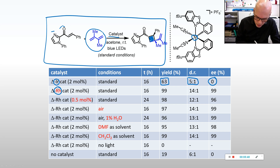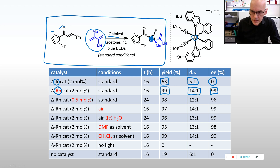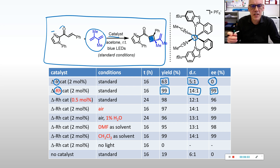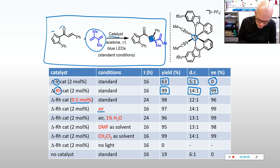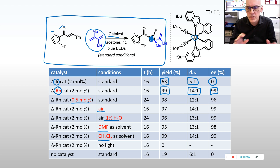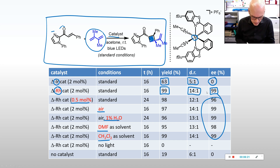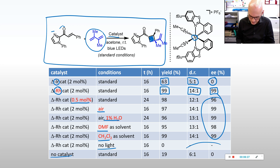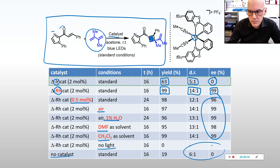However, when we switch from iridium to rhodium, suddenly — same reaction conditions — we get 99% yield, 14:1 DR, so mainly one diastereomer, and 99% EE. Basically only one enantiomer formed. 99% EE corresponds to roughly a 200:1 ratio of the two enantiomers. We can use low catalyst loading, run it in the presence of air, in the presence of water, and in different solvents. Any condition will do — we always get the product with very high enantiomeric excess. We need light: without light, nothing happens. Without catalyst, nothing happens.